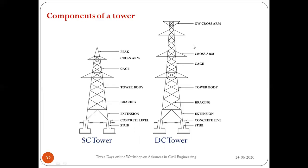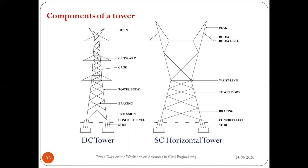Foundation type varies depending on soil type. The double circuit vertical tower has a ground wire cross arm instead of a peak, or alternatively horn arrangements. The right side image shows a single circuit horizontal tower with peaks and a boom — a lattice-type steel beam arrangement from which insulators hang and conductors are supported. In vertical towers, the portion below the bottom cross arm is called the waist level; in horizontal towers, the narrow portion is also called the waist.